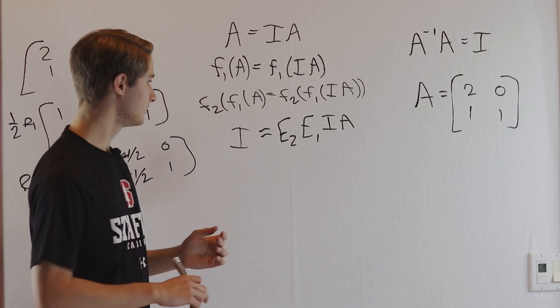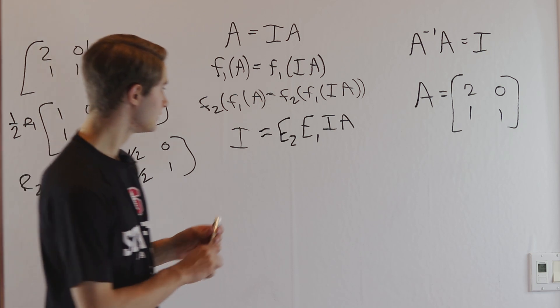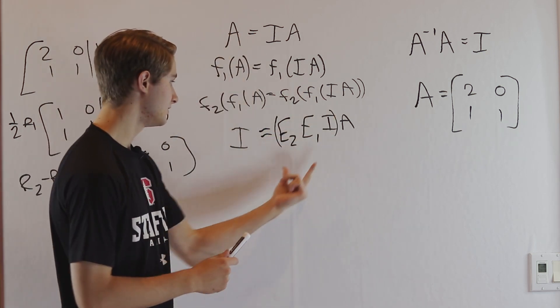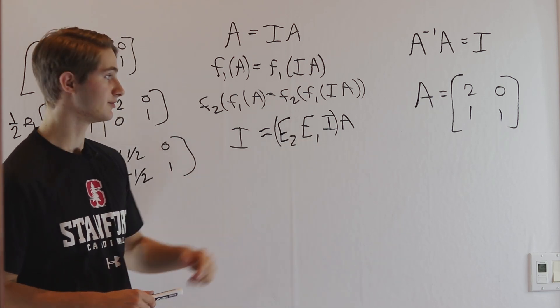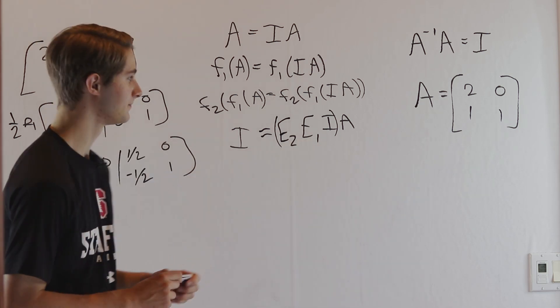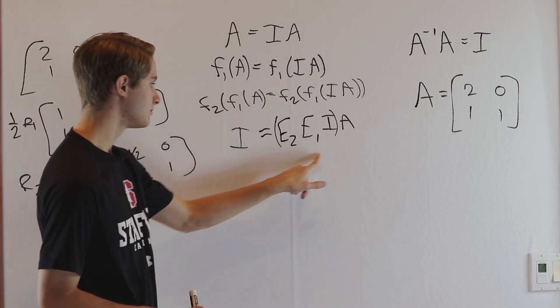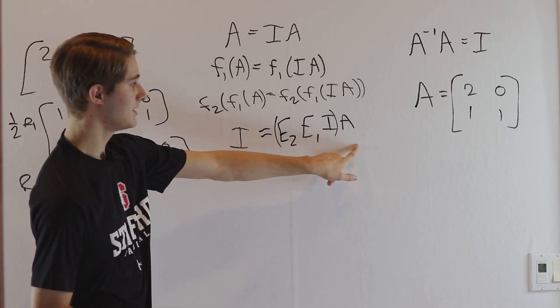When we multiply matrices, we can group them however we want. If we put parentheses around this and do this multiplication first, we get the same answer. Let's look at what we have: the identity matrix equals some product of matrices times A.